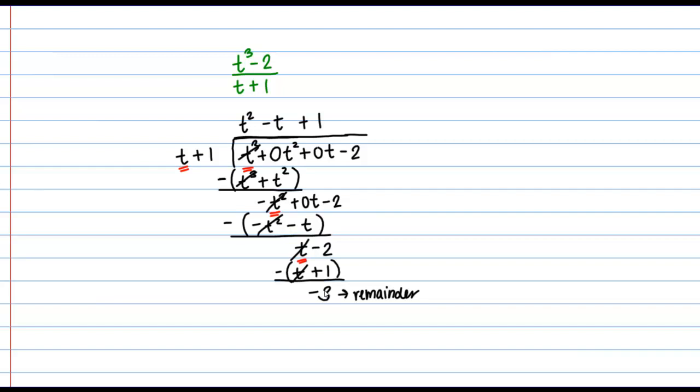Then the way we would write our answer is this division or this rational function is equivalent to t squared minus t plus 1. What I have on top here is my result. Then I need to make sure to include the remainder. The way I write the remainder is minus 3 and then over what's outside the division sign here. Over t plus 1 in this case. This is my result of my long division problem.